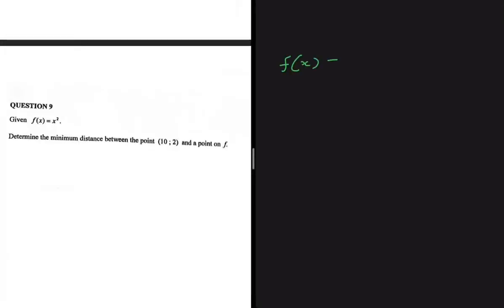f(x) = x² — determine the minimum distance between the point (10, 2) and a point on f. It would be a really painful exercise if we calculated the distance between every point on f and this given point. Instead, let's do it for the function as a whole.